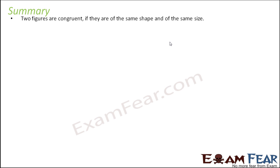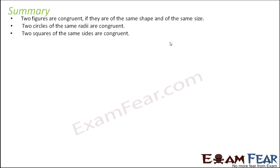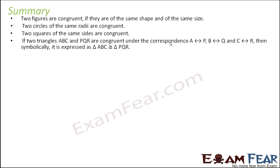Let's do a quick summary of whatever we have studied. Two figures are congruent if they have the same shape and same size. We have seen the laws of triangle congruence. Two circles of the same radius are congruent, because if you draw two circles of same radius they will overlap — having same shape and same size. Two squares of same size are congruent. If two triangles are congruent under mapping A to P, B to Q, C to R, then triangle ABC is congruent to triangle PQR, where AB equals PQ and BC equals QR. This convention has to be followed.